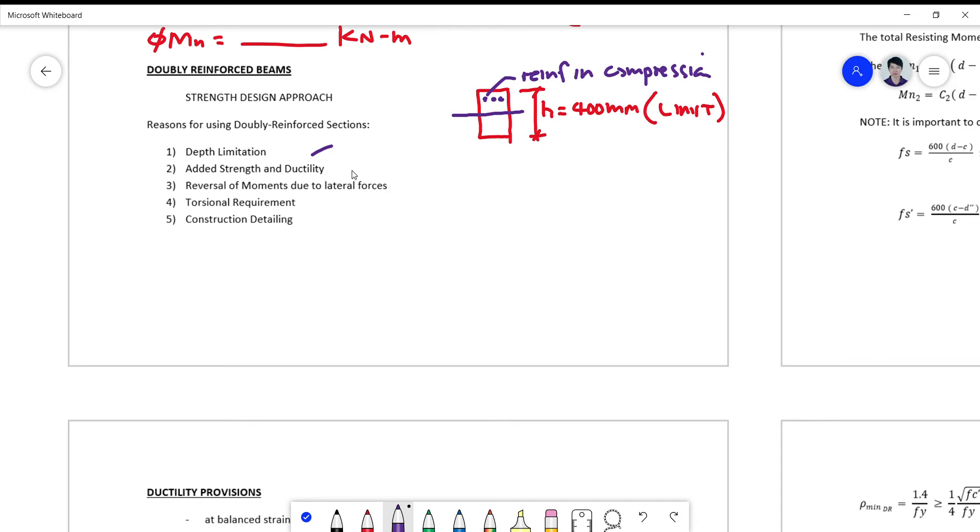So C now will no longer be equal to only the stress block area or volume, but rather it can be due to C1 plus C2.